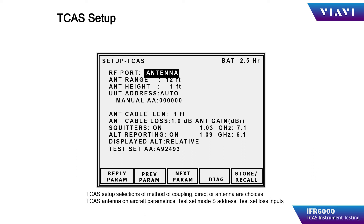Measure and input the distance and height values for the antenna range and height. Select auto for the UUT address so that the IFR 6000 can automatically determine the Mode S address of the aircraft being tested. If the test set has trouble determining the address, the selection should be set to manual and the operator must input the desired test aircraft address.